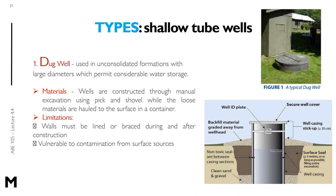Different types of shallow tube wells include the dug well, which is used in unconsolidated formations with large diameters that permit considerable water storage. Dug wells are constructed through manual excavation using a pick and shovel, while loose materials are hauled to the surface in a container. Walls must be lined or braced during and after construction. Dug wells are vulnerable to contamination from surface sources, typically less than 15 meters or 50 feet deep, and about one meter or three feet wide.